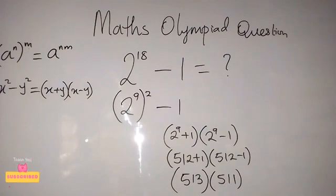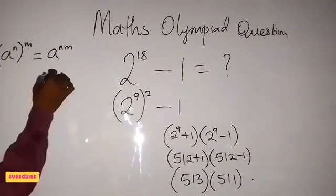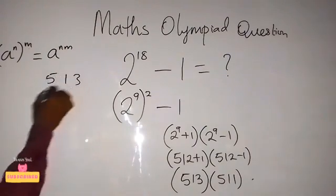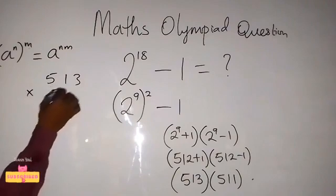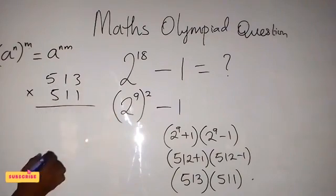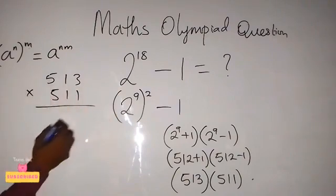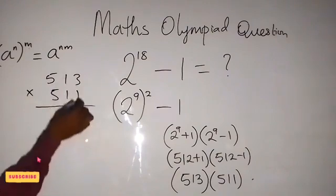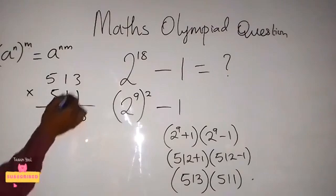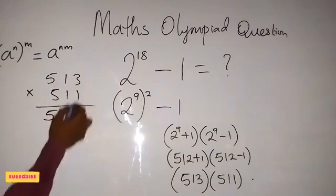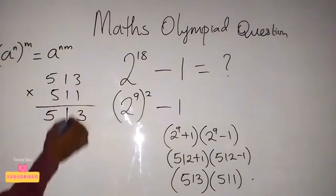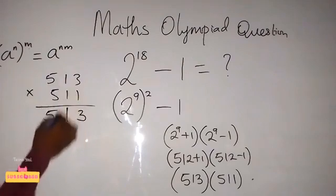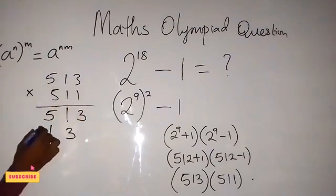So when we multiply, we can first use 1 to multiply. And 1 times 3, that's 3. 1 times 1, that's 1. 1 times 5, that's 5. Also use the second one to multiply, and that will be under this one. 1 times 3, that's 3. 1 times 1, that's 1. 1 times 5, that's 5.